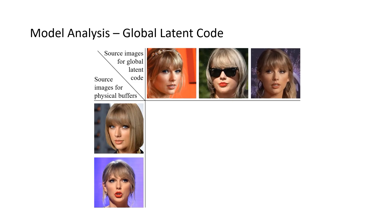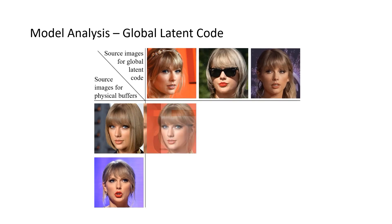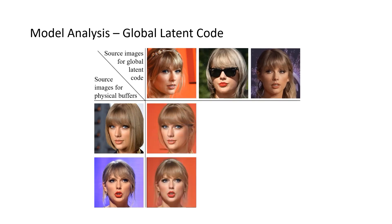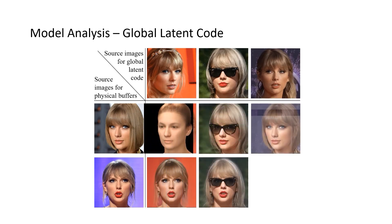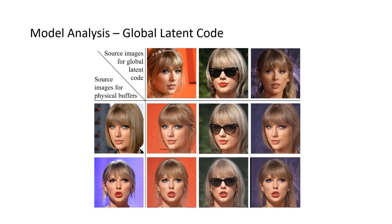Next, let's take a deeper look at our model. First, we would like to know what the global latent code exactly encodes. To achieve this, we mix the two kinds of conditions that drive the image generation process. We use the left two images for physical buffers and the top three images for the global latent code. By doing a mix and match of these conditions, we can see that the physical properties like pose and expression are consistent with the left images, while other nuances like background or glasses are similar to the top images. These results demonstrate that in Diffusion Rig, the physical properties are well disentangled from other appearance properties that physical buffers cannot describe.